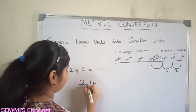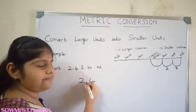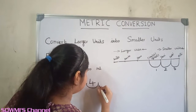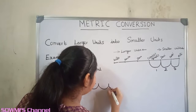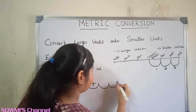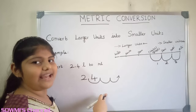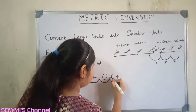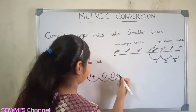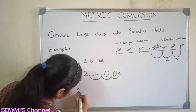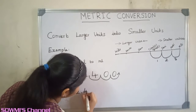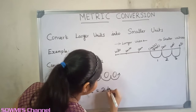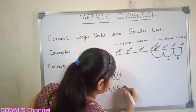So from the decimal point, we have to move three steps to the right. We have to fill zeros in the extra spaces. So the answer is 2.4 liters is equal to 2400 milliliters.